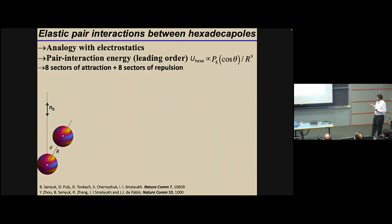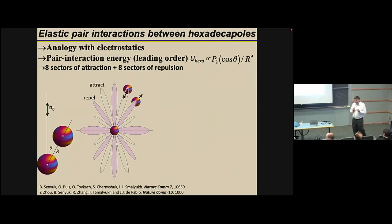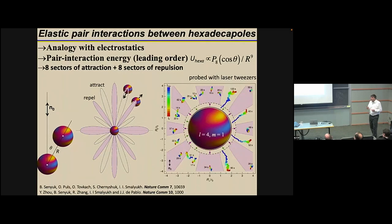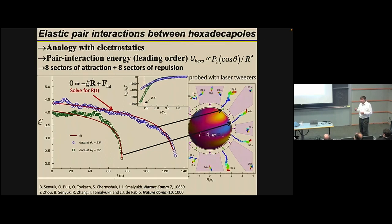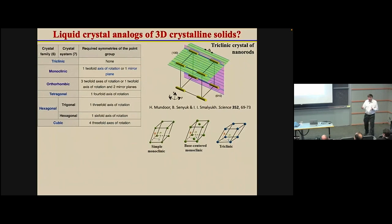The electrostatic analogy implies certain pair interactions described by a pair interaction potential in terms of Legendre polynomials. As we probe such interactions with laser tweezers, we find angular sectors of attraction and repulsion exactly as predicted by the nematostatic analogy with electrostatics. We can also characterize pair interaction potentials quantitatively and see very good agreement with this theoretical description. This gives us a very simple way of designing colloidal assembly, and with it we can realize very low-symmetry triclinic colloidal crystals.